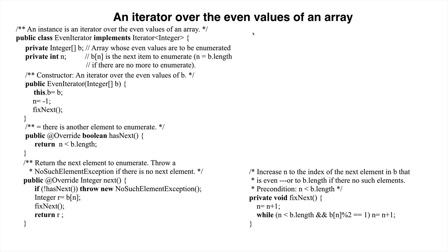Most iterators have this form. First, there are fields to represent what is being enumerated, an array like B, a linked list, something that describes a set, whatever. Second, there are fields like n to help describe what remains to be enumerated.